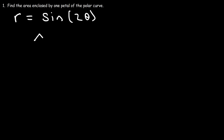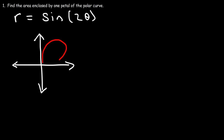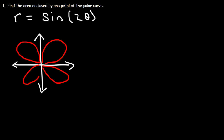The first thing I recommend doing is to graph the equation. And so when you graph this equation, you should get something that looks like this — it's not a perfect graph, but this is the generic shape. There are four petals in this curve, and we only need to find the area of just one of them because they're all the same. So let's choose this one.